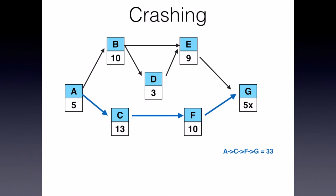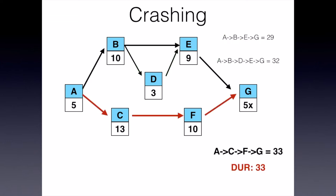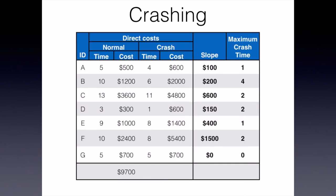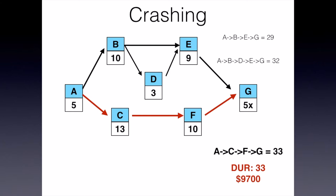So I need to figure out what is the critical path, because I want to concentrate on just those tasks on the critical path. Adding things up: the path A-C-F-G is 33 days, A-B-E-G is 29 days, and A-B-D-E-G is 32 days. So it looks like the first path is my critical path, giving my overall project a duration of 33 days. I'm going to first look at what is the cost of my project under normal conditions — adding up all these direct costs, I find that my project is going to cost $9,700.